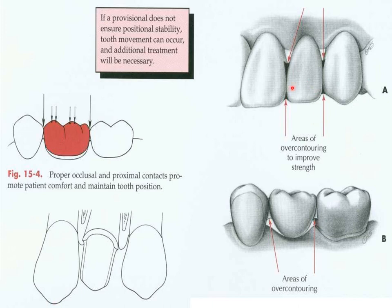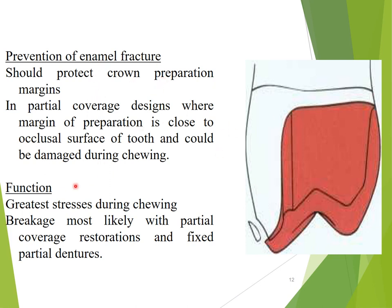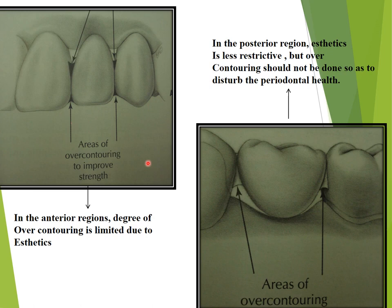As you can see in photos A and B, we are talking about over-contouring in the anterior region and in the posterior region. Prevention of enamel fracture is also important — the provisional should protect the crown preparation margins and have proper coverage so that it doesn't get damaged during chewing or mastication. Breakage is most likely with partial coverage restorations and fixed partial dentures, which should be avoided by following all the principles of making a proper provisional restoration.